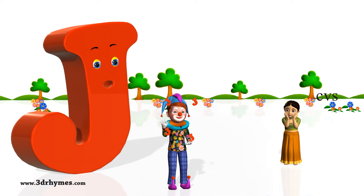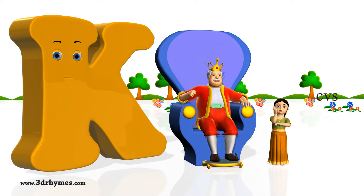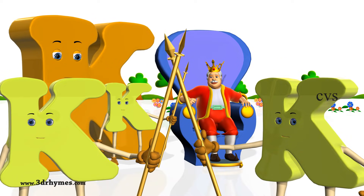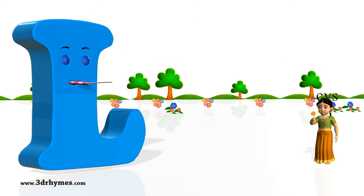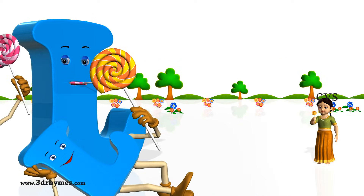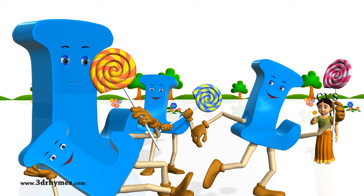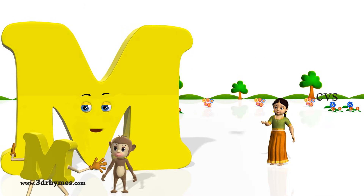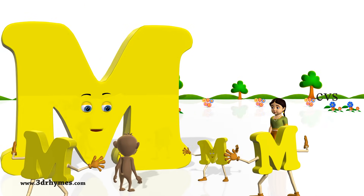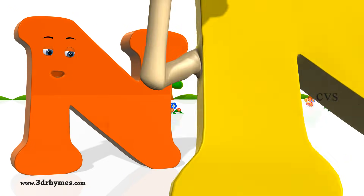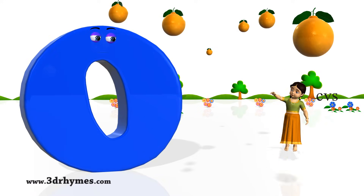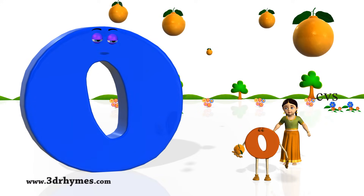K for king, L for lollipop, L for monkey, N for nest, O for orange.